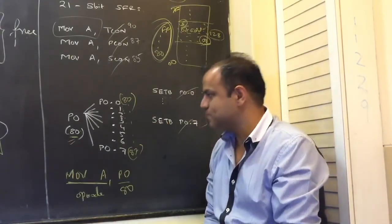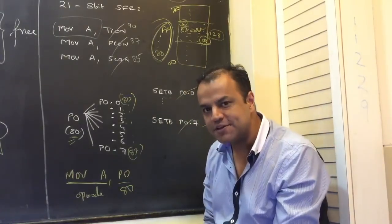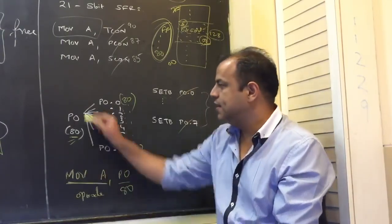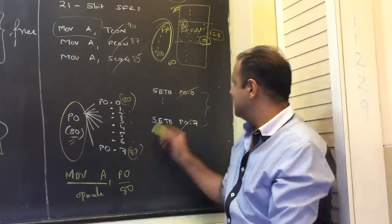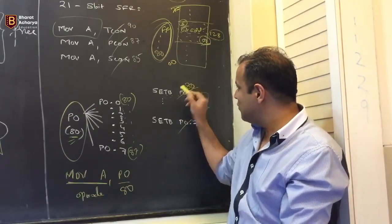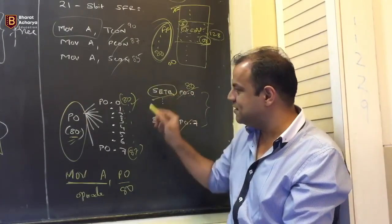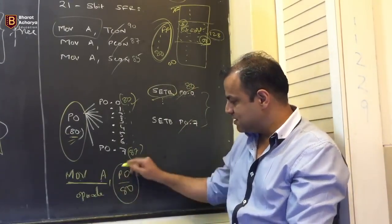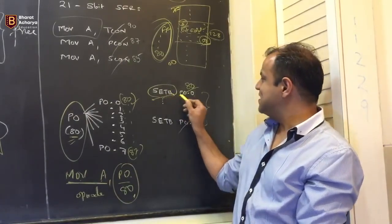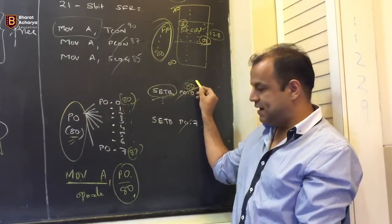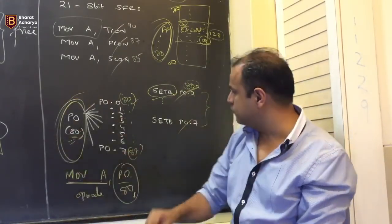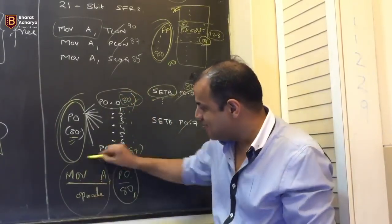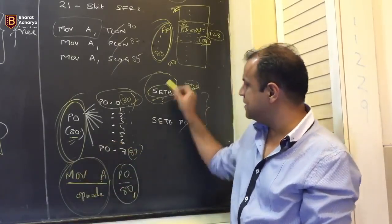So what does that mean? If you do a byte operation — like MOV, ADD, or subtract — at address 80, it will affect the whole port 0. But if you do a bit operation like SETB P0.0, that also happens at address 80, but since it is a bit operation, it will affect only P0.0. When you write MOV A, P0, the assembler substitutes 80 for port 0. When you write SETB P0.0, the assembler again substitutes 80 — but the instruction type distinguishes: this 80 means the whole port 0 as a byte, while this 80 means bit location P0.0.